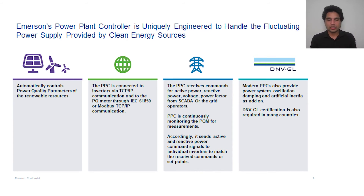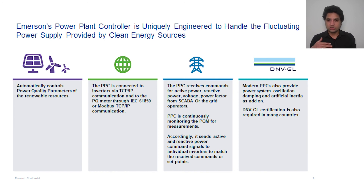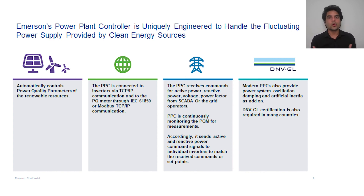Modern PPCs nowadays have two important parameters: power system oscillation damping and artificial inertia. A power system oscillation damping module should be present in the PPC to damp power oscillations. Because PV-based or wind-based generation does not have rotational inertia, artificial inertia should be implemented in the PPC. In many countries, PPCs may be required to have certification, and DNVGL is one of the bodies which provides that certification.